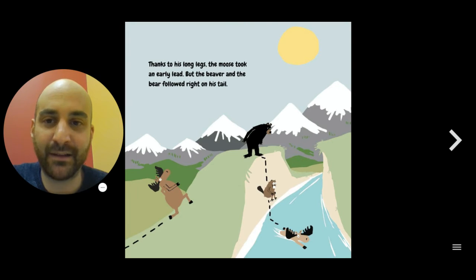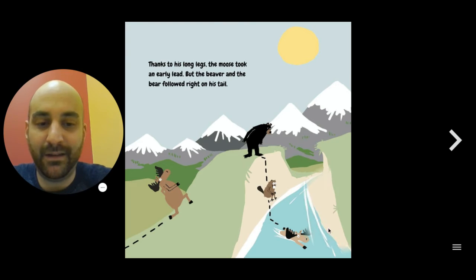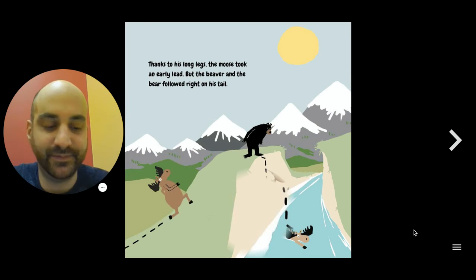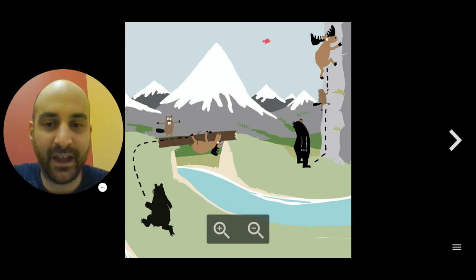Thanks to his long legs, the moose took an early lead. But the beaver and the bear followed right on his tail. You can see the moose is right out in front down here. Beaver and bear are right behind. Here they are. It looks like they're climbing over a log. Then they're going up a rocky side of the mountain.